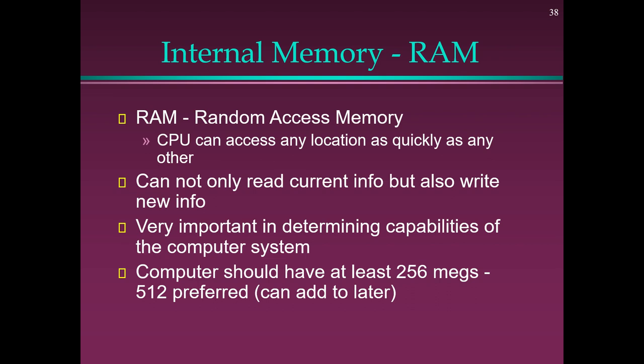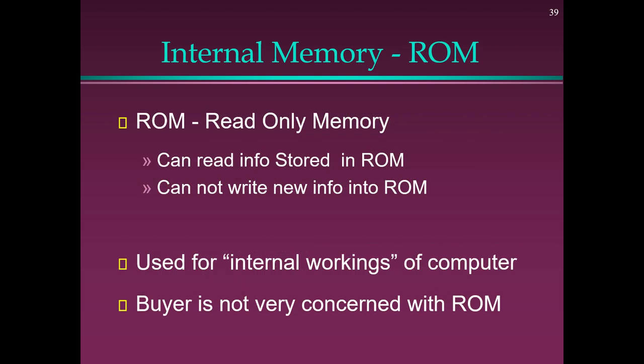Internal Memory — RAM (Random Access Memory): The CPU can access any location as quickly as any other. Can read current info and write new info. Very important in determining capabilities of the computer; should have at least 256 MB to 512 MB. ROM (Read Only Memory): Can read information stored in ROM but cannot write new information. Used for internal workings of the computer; buyers are not very concerned with ROM.